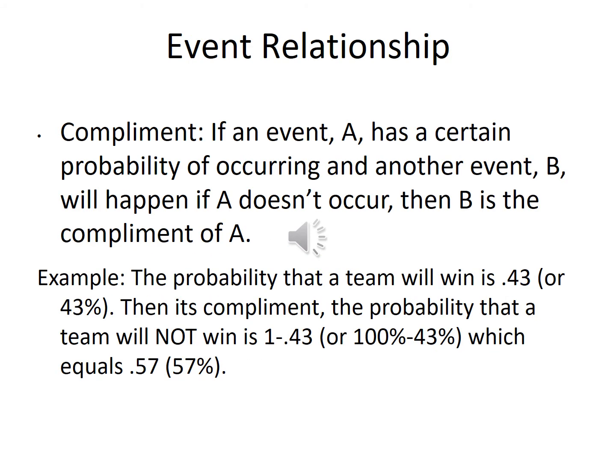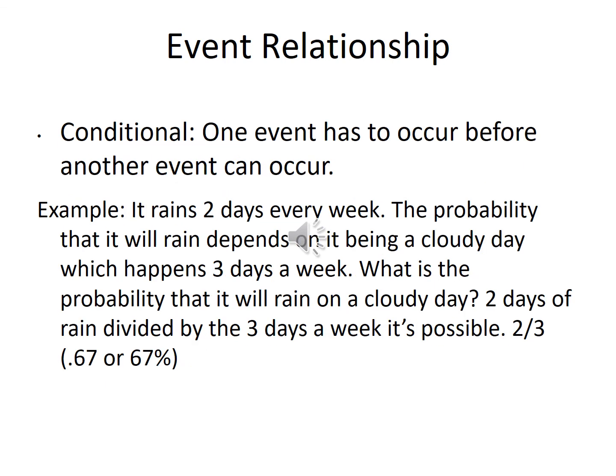Some different probability relationships: a complement — if event A has a certain probability, then event B (the complement of A) is what happens if A doesn't occur. For example, if a team's probability of winning is 0.43, the probability of not winning is 1 minus 0.43, or 0.57. They all add up to 1. Next is conditional probability, where one event must occur before another can. For example, it rains two days a week, and it's cloudy three days a week — the probability of rain given a cloudy day is two out of three.